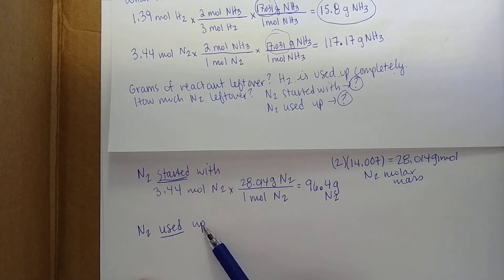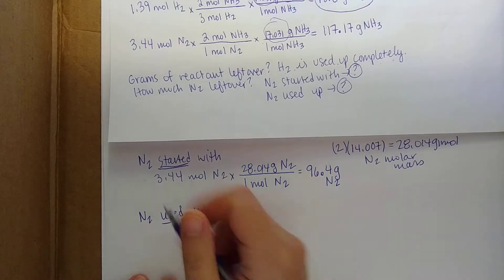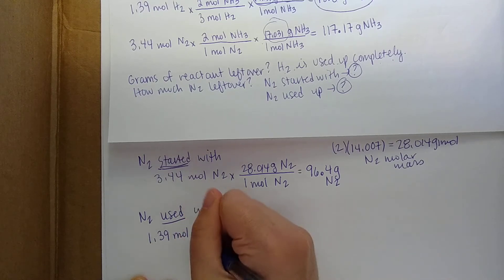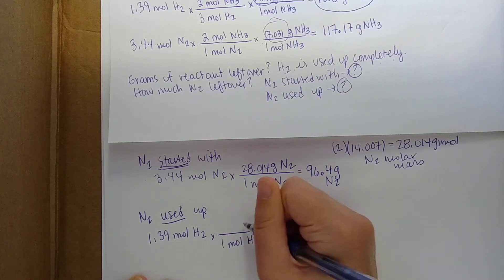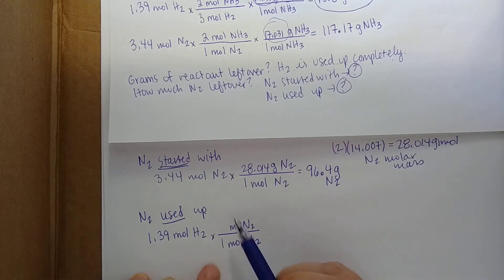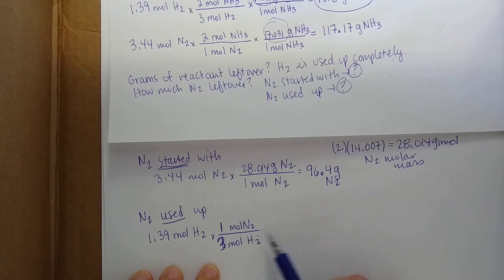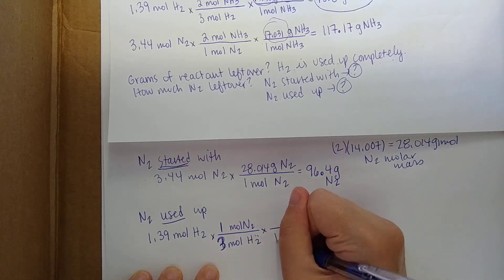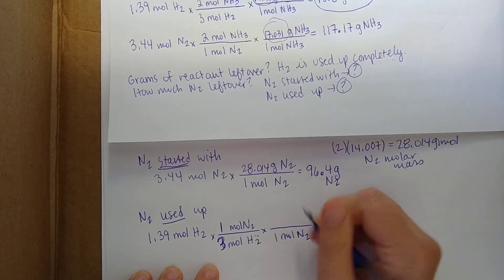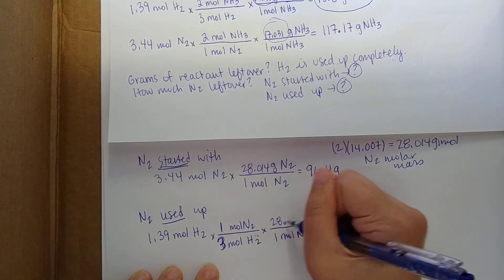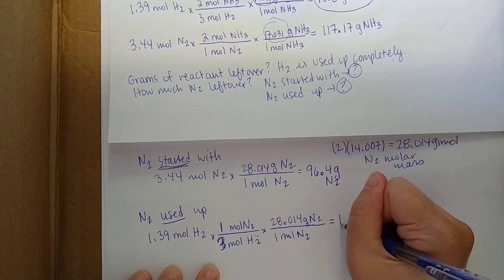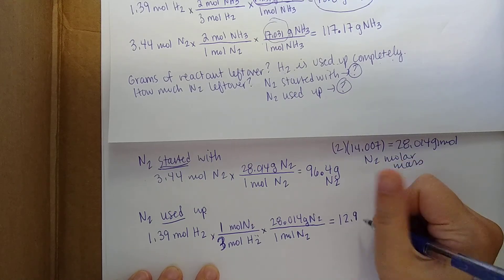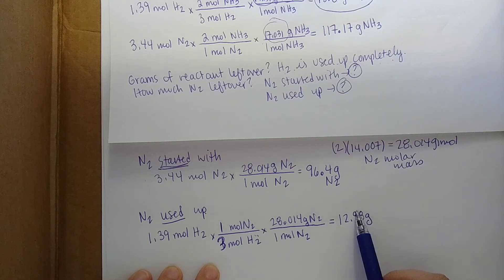Now we figure out how much N2 was used up. The only information we have is that we used up 1.39 moles of H2. From our balanced reaction, for every 3 moles of H2, 1 mole of N2 is used up. We then convert that to grams using the N2 molar mass of 28.014 grams per mole. This gives us approximately 12.98 grams — around 13 grams — of N2 used up.